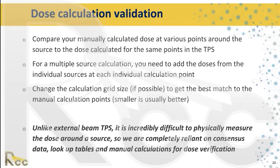It is strongly encouraged that every institution implementing a new brachytherapy treatment planning system perform an independent manual dose calculation to validate the TPS dose — both for commissioning and patient-specific QA. You can use the TG-43 formula for a simple first-order calculation or use available lookup tables, comparing manually calculated dose at various points around the source to those same points in the planning system. For multiple source calculations, doses from individual sources at each point are summed.